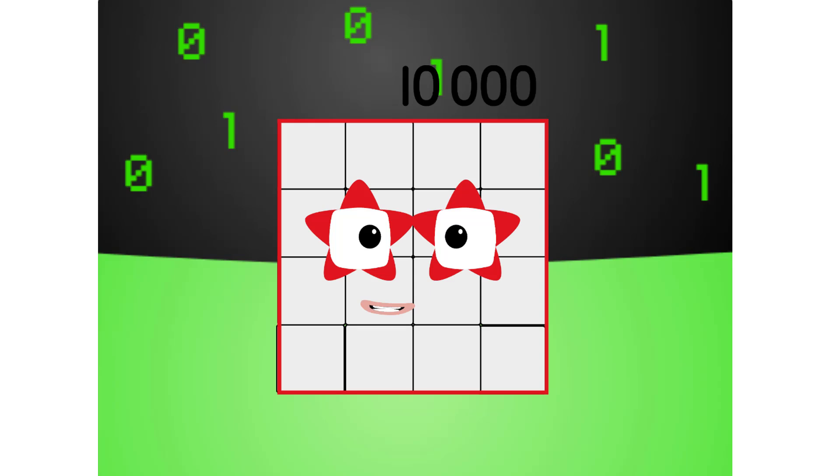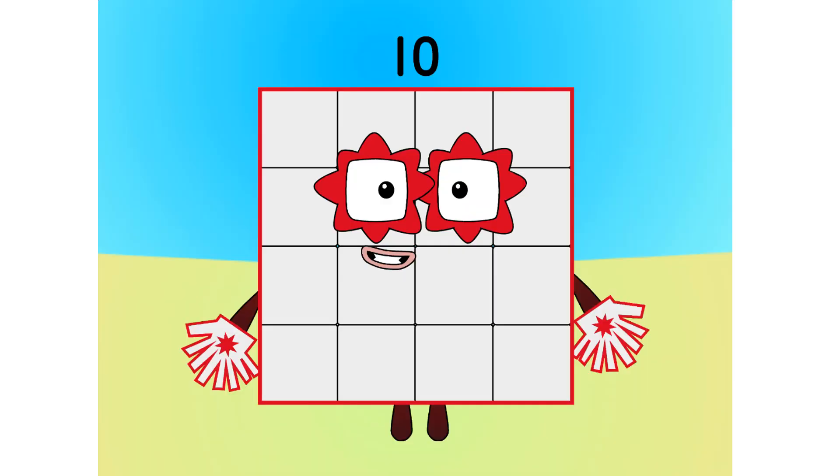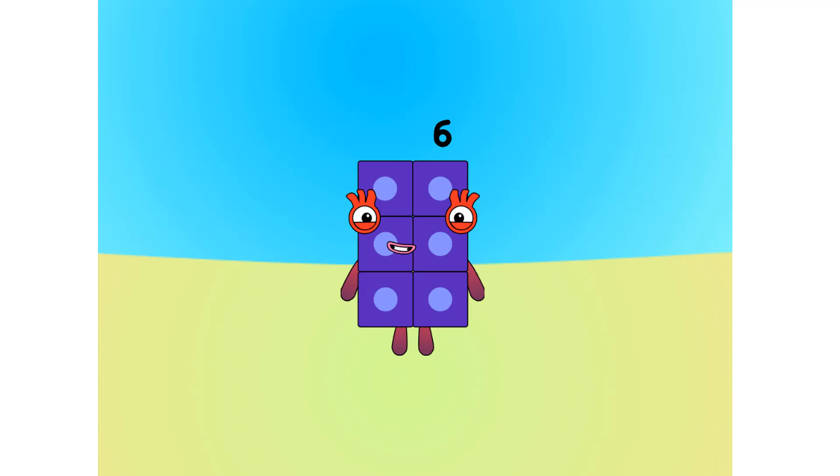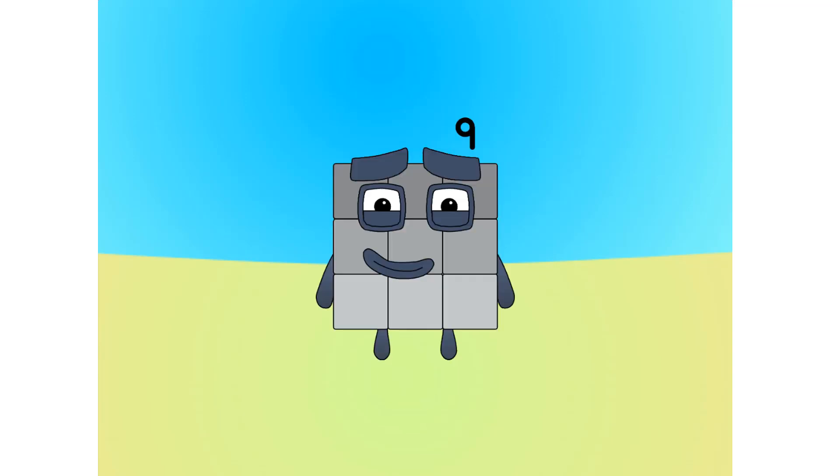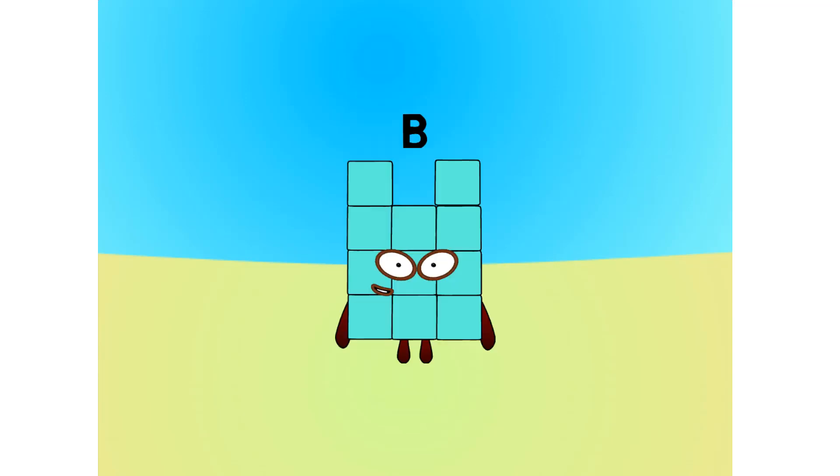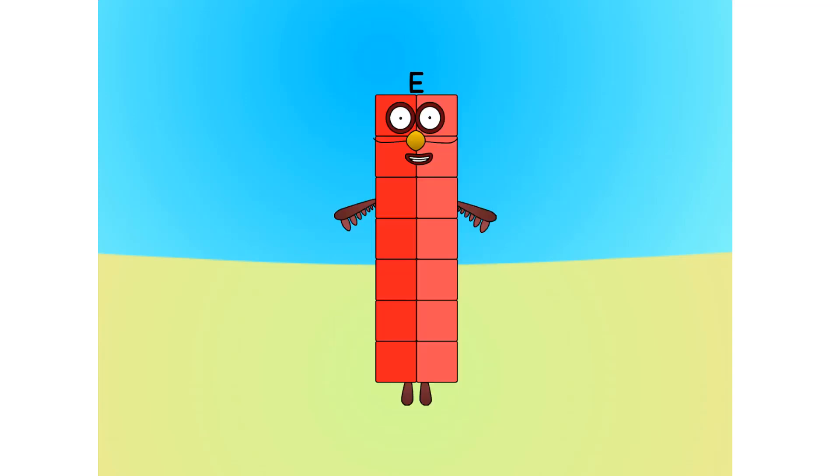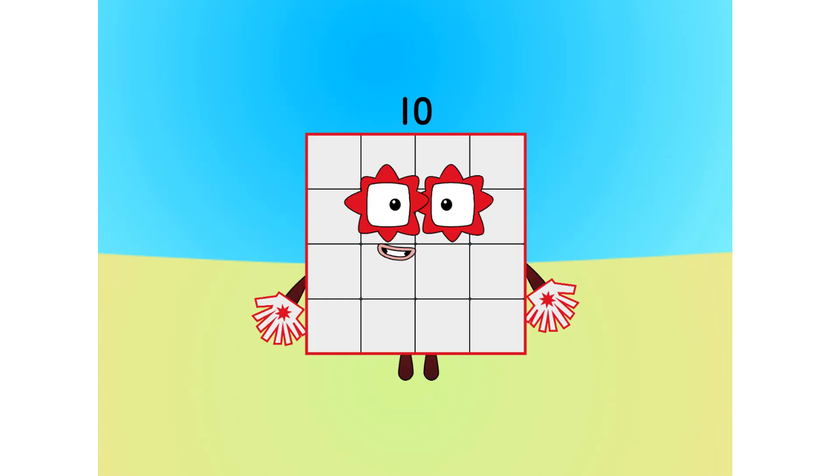Let's move on to the next base. This is base sixteen, also known as hexadecimal or hex. If this is base sixteen, there needs to be sixteen digits: one, two, three, four, five, six, seven, eight, nine, A, B, C, D, E, F, one zero.